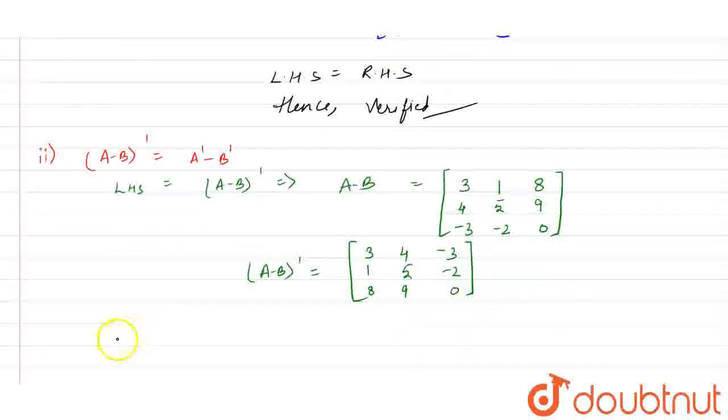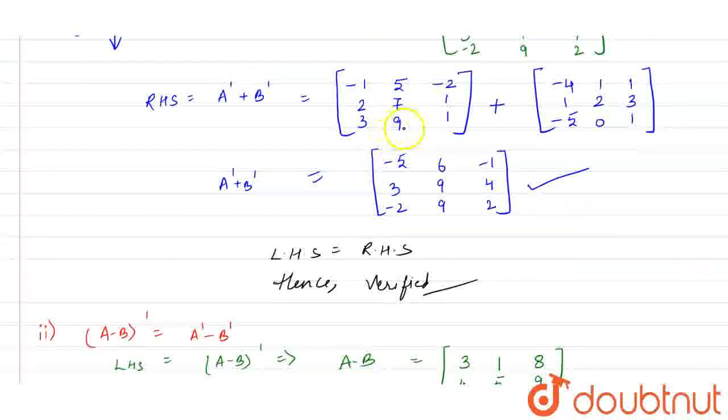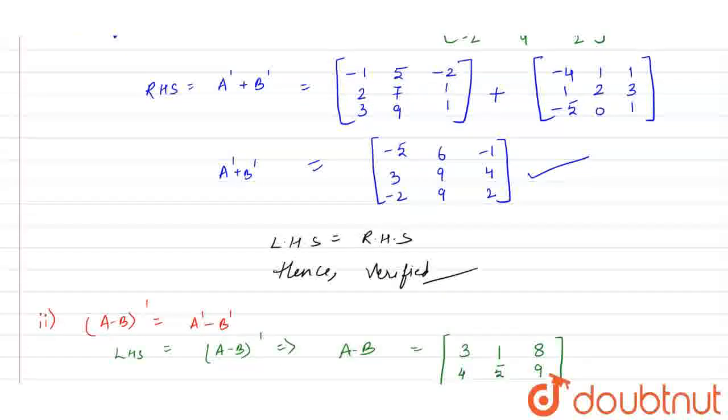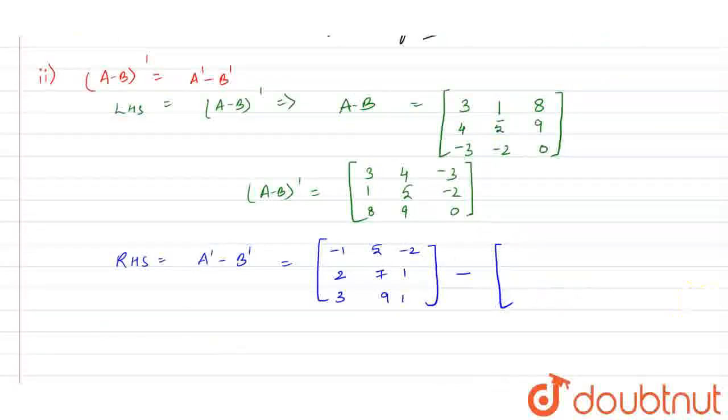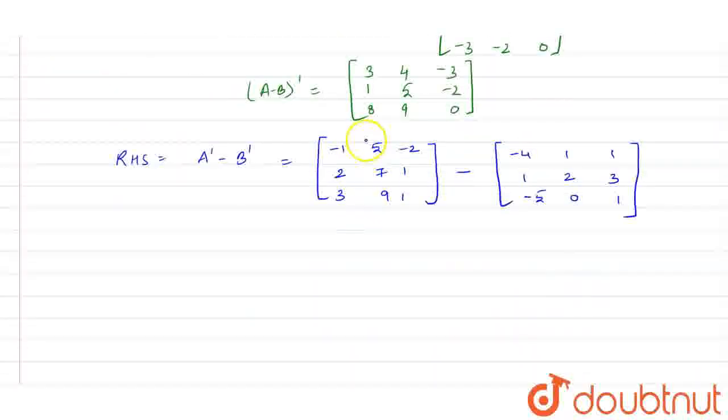RHS will be A transpose minus B transpose and for that since we have calculated the transpose in first part, so it will be minus 1, 5, minus 2, 2, 7, 1, 3, 9, 1 minus sign and here the B transpose minus 4, 1, 1, 1, 2, 3, minus 5, 0, 1. So here let us subtract these values. Minus 1 plus 4 is 3, 5 minus 1 is 4, minus 2 minus 1 is minus 3.